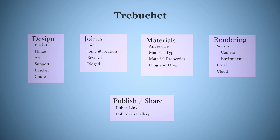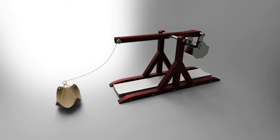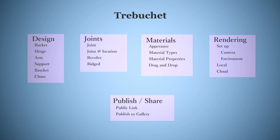This is going to be our outline. I'll show you how I design the bucket, the hinge that connects the bucket to the arm, the arm, the support, the basket that will have the projectile for the trebuchet, and then finally the chute that is underneath the whole mechanism. Then we're going to take all of those individual components and use joints to align them and set them up properly so that they are working together in the way that they should, using primarily the rigid joint and the revolve joint.